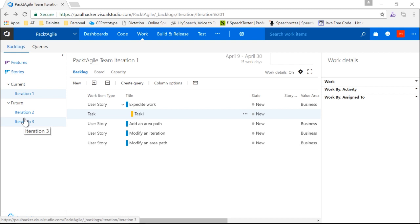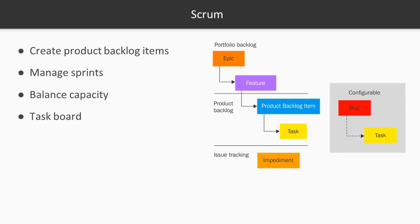That's pretty much the agile methodology working in TFS. Now let's talk about Scrum in TFS. Scrum is different from agile in a couple of ways. First, we manage what we call product backlog items or PBIs. PBIs fall right under features and just before tasks. The flow is: you create an epic, you create features off that epic, and then off the features you create product backlog items or PBIs. Then off each PBI, you task them out into a certain number of tasks.